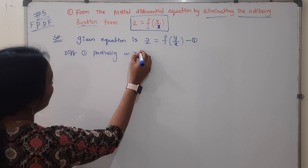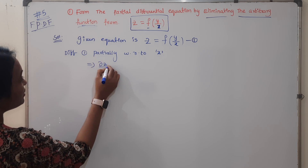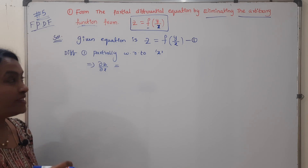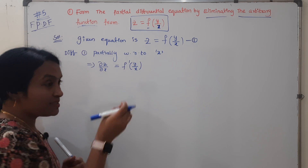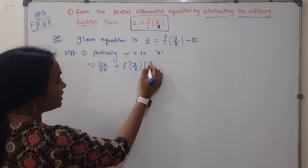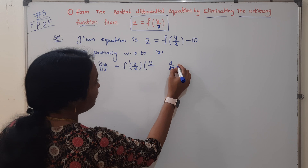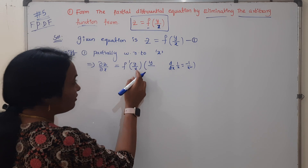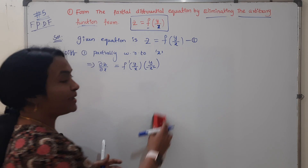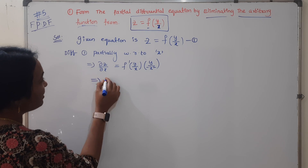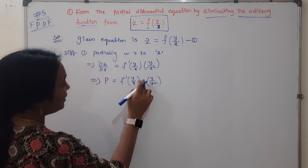Differentiate partially with respect to X. We have to do partial differentiation: dou Z by dou X. f will become f dash, first function differentiated. So f dash of (y/x), and then the variable inside — y is a constant, so differentiate 1/x with respect to x, which gives minus 1/x². So dou Z by dou X equals f dash(y/x) multiplied by minus y/x².